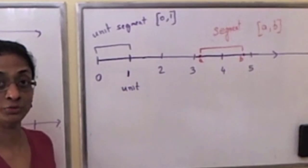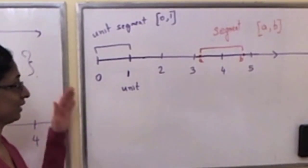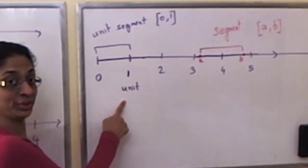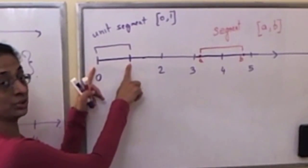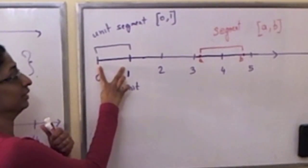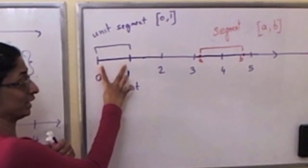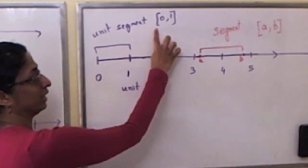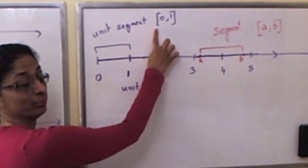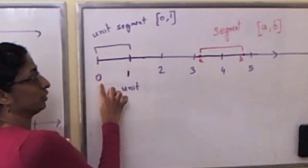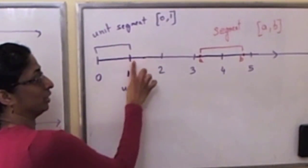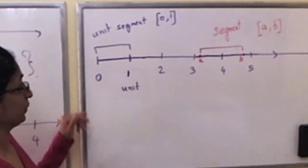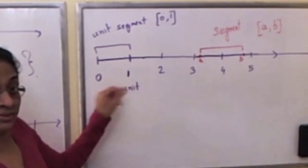Another quick review of a segment and its length. Here's the number line. 1 is called a unit. And this particular collection from 0 to 1 is called a unit segment — the collection of points between 0 and 1. It's denoted with square brackets: left-hand point of the segment, comma, right-hand point of the segment. We know the length of the unit segment is assigned as 1.